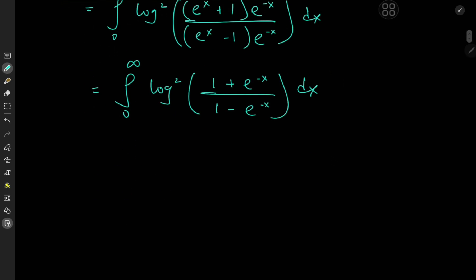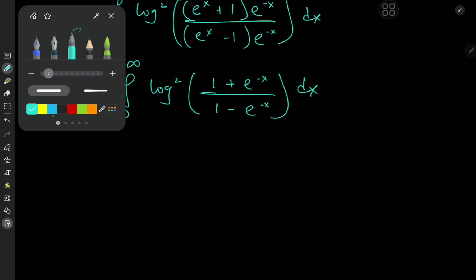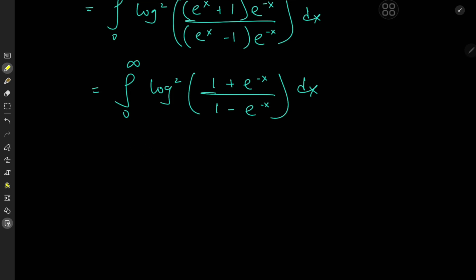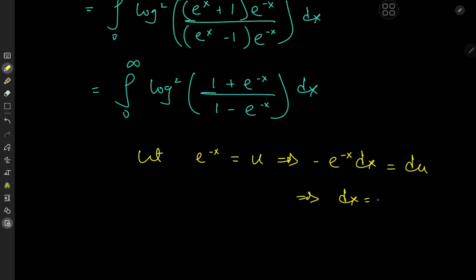We can invoke a really nice substitution here: let e^(-x) equal u. This implies that negative e^(-x) dx = du, and further that dx = -1/(e^(-x)) du. Since e^(-x) = u, we have dx = -1/u du. That's our new differential element.